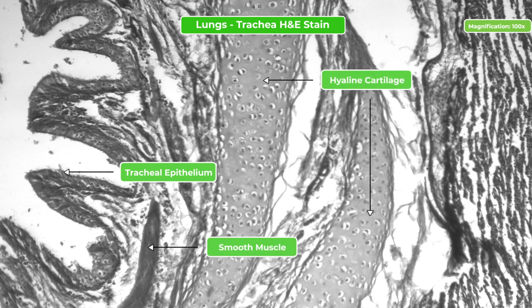Based on the appearance of the different tissues, a pathologist can identify any abnormalities or damage to the trachea and determine the types of tracheal disease. For example, the presence of inflammation may indicate chronic obstructive pulmonary disease.